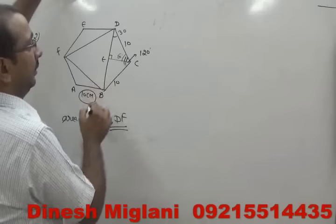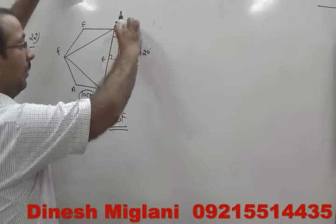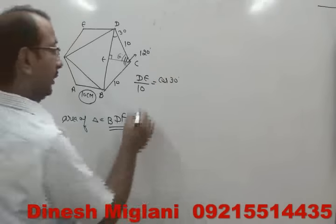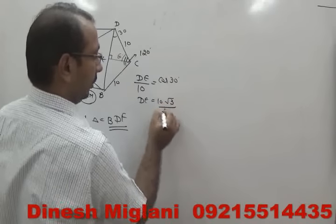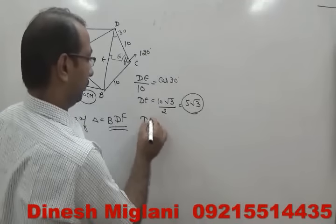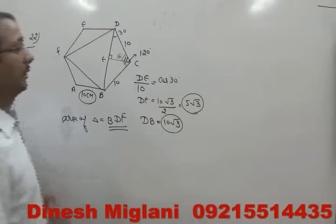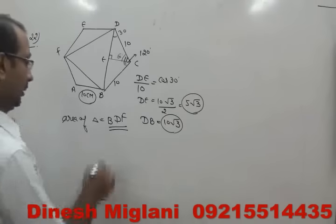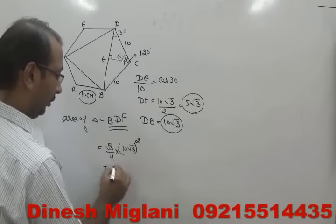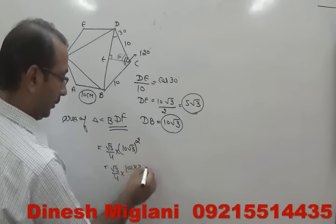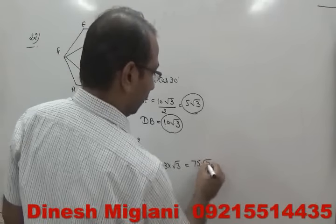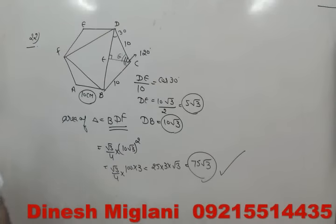Concept number 25: a square inscribed in a semicircle of radius 10, with two base corners on the diameter and two top corners on the arc. By symmetry, let the side be a. The half-diagonal from center to top corner gives: a² + (a/2)² = R² = 100. So 5a²/4 = 100, giving a² = 80, so a = √80 = 4√5. Wait — the instructor states a² = 8, a = √8.